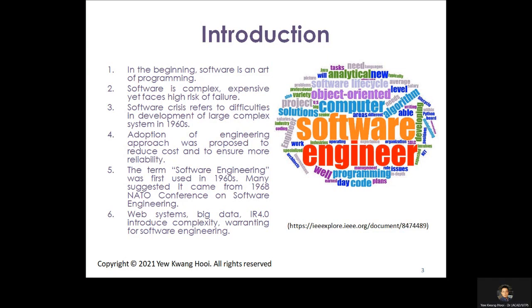Thus, the term 'software engineering' was first used. Many suggested it came from the 1968 NATO conference on software engineering. Nowadays, web systems, big data, and industrial revolution 4.0 introduce even more complexity, thus warranting software engineering. So ask yourself: software engineering or software art — to manage the complexity of today's computer systems?